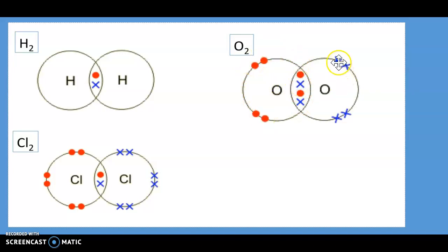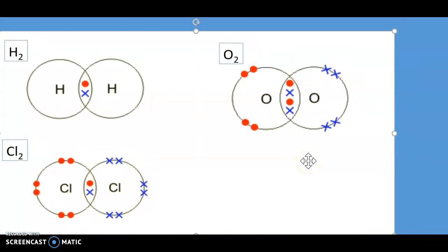Hence the formula for oxygen is O2 because it's sharing two electrons, and oxygen is normally represented as O double bond O. We then have chlorine molecule here with chlorine.